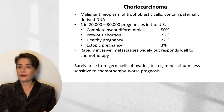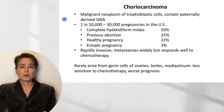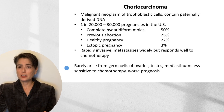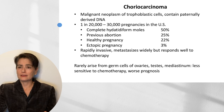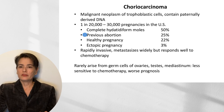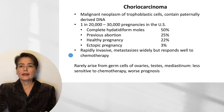Choriocarcinoma is a malignant neoplasm of trophoblastic cells. There are two types: gestational choriocarcinoma, which contains paternally derived DNA, and non-gestational choriocarcinoma, which can arise from germ cells of the ovaries, testes, or mediastinum and does not have paternally derived DNA. Gestational choriocarcinoma arises in about 1 in 20,000 to 30,000 pregnancies in the United States and can follow a variety of conditions, including complete hydatidiform mole, previous abortion, healthy pregnancy, or ectopic pregnancy. This is a very aggressive malignancy — rapidly invasive and widely metastasizing — but fortunately responds well to chemotherapy. Non-gestational choriocarcinoma is less sensitive to chemotherapy and has a worse prognosis.